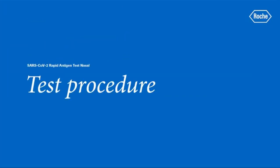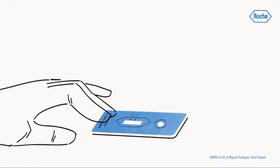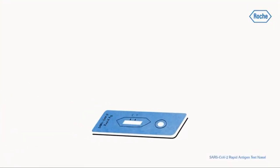Here's how to proceed with the sample. Place the test device on a flat surface. Turn the tube and apply four drops of extracted sample at a 90 degree angle to the specimen well of the test device.